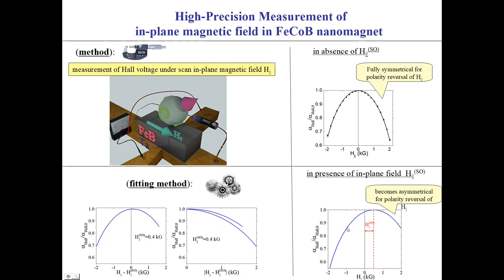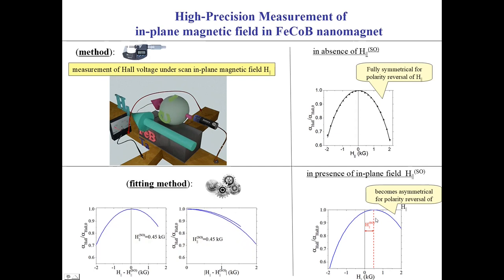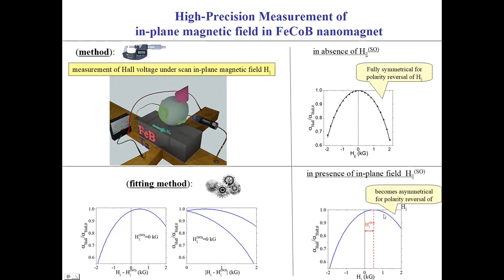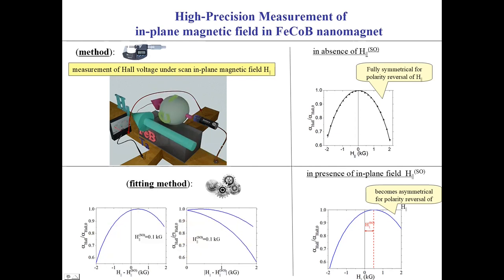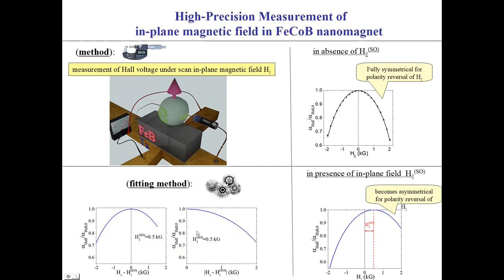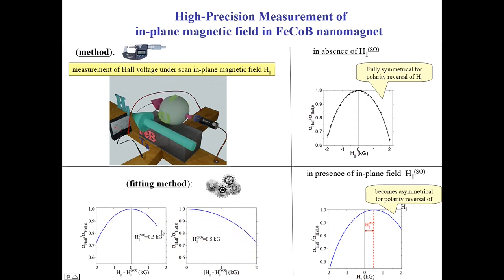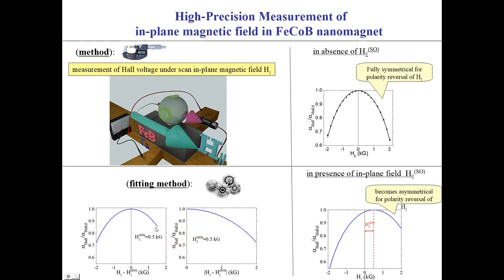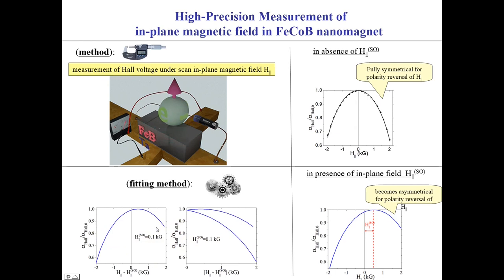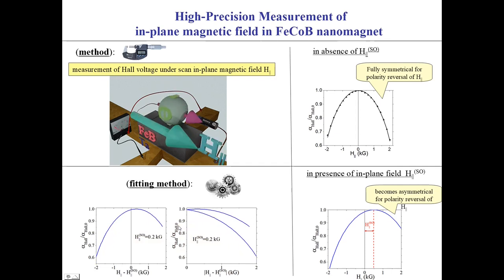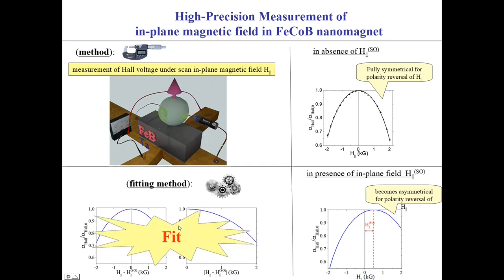This graph shows the case of the same measurement but when there is a current-induced magnetic field HCO. The data is still symmetrical, but the symmetry center is offset from center by the value of HCO. The positive and negative parts of the measured data are fitted to each other with the offset magnetic field as a parameter. The HCO field is found when the mean square difference between parts is smallest. This method gives a very high measurement precision, evaluated to be about 0.1 to 1 Gauss.